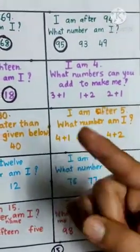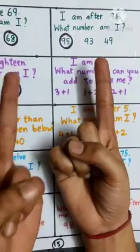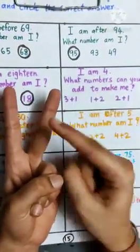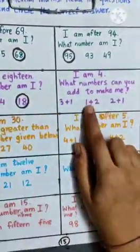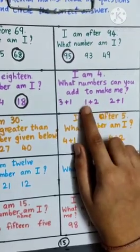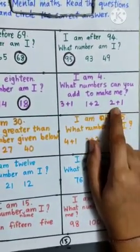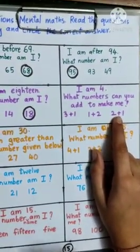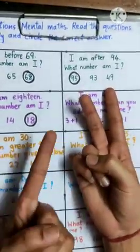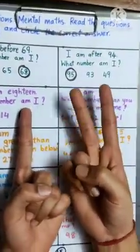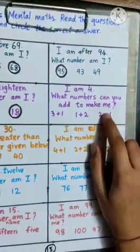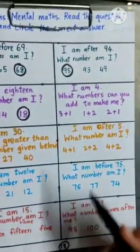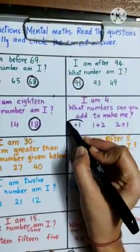1 plus 2: 1, 2, 1, 2, 3. This does not make 4. Now, look at the third one. 2 plus 1: 1, 2, 3. It makes 3, not 4. So, we will circle the first one.